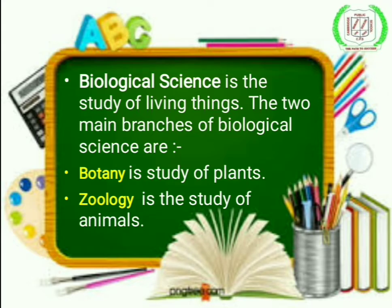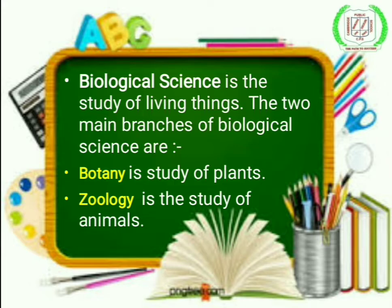Biological science is the study of living things — organisms that have life. The two main branches of biological science are botany and zoology. Botany is the study of plants, and zoology is the study of animals — from small to large, and even human beings fall into the animal category.